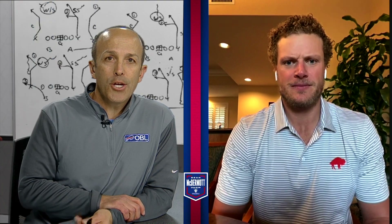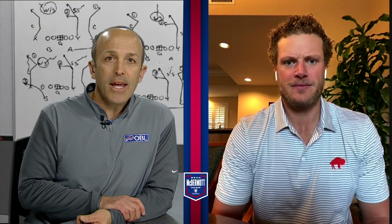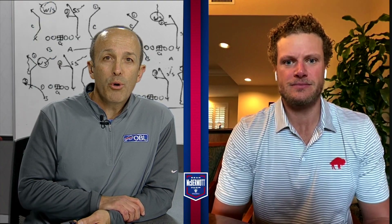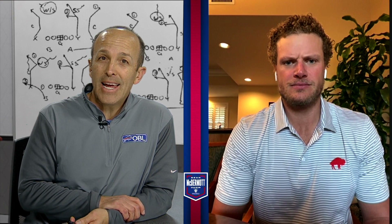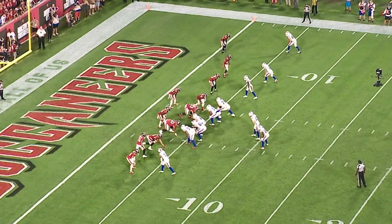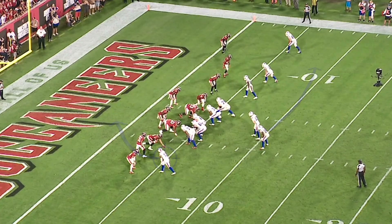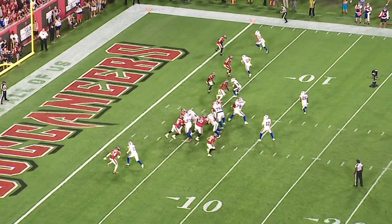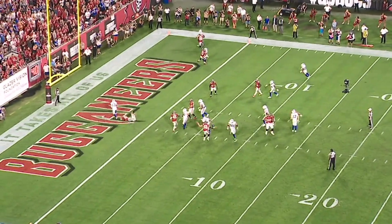On their next drive, Josh connected with Gabe Davis from four yards out to bring the Bills within three. In the tight red zone from the four-yard line, these decisions have to be made extremely fast. Josh Allen has to beat the blitz coming off the left side of the Bills' formation. He identifies a mismatch and one-on-one coverage, and throws it to his biggest receiver in Gabe Davis for the touchdown.